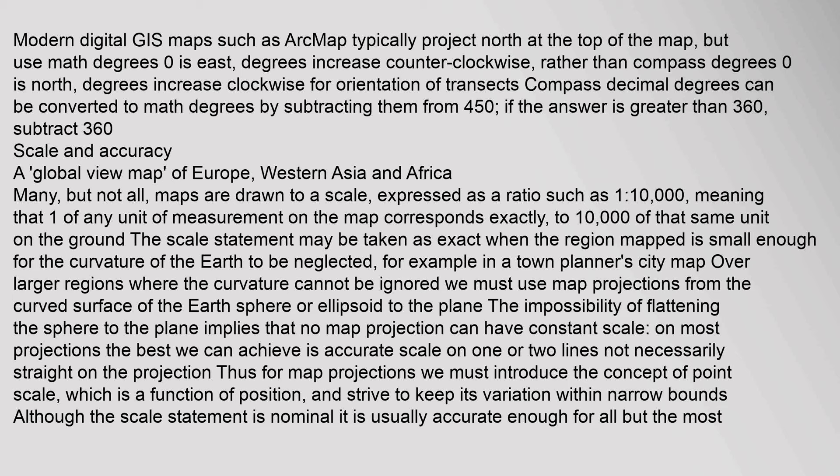Many, but not all, maps are drawn to a scale, expressed as a ratio such as 1 to 10,000, meaning that one unit of measurement on the map corresponds exactly to 10,000 of that same unit on the ground. The scale statement may be taken as exact when the region mapped is small enough for the curvature of the Earth to be neglected, for example in a town planner's city map. Over larger regions where curvature cannot be ignored, we must use map projections from the curved surface of the Earth's sphere or ellipsoid to the plane. The impossibility of flattening the sphere to the plane implies that no map projection can have constant scale; thus we must introduce the concept of point scale, which is a function of position.